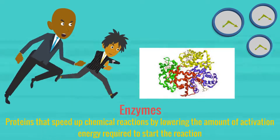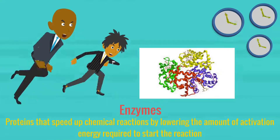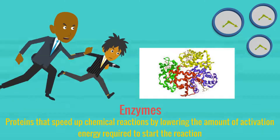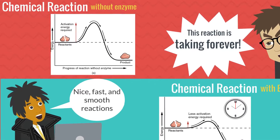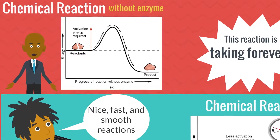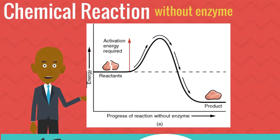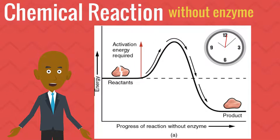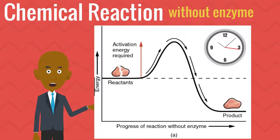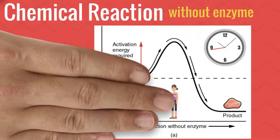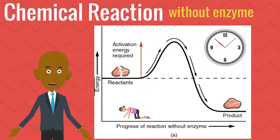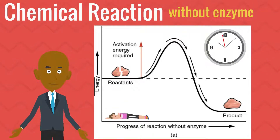That brings us to enzymes — special proteins that speed up chemical reactions by lowering the amount of activation energy required to start the reaction. Let's look at the importance of enzymes affecting chemical reactions, starting without an enzyme. The amount of activation energy required to convert reactants into products takes much longer since there is no enzyme present. Without the enzyme, the chemical reaction takes much longer to occur, which can lead to bad consequences in the functioning of an organism's body.